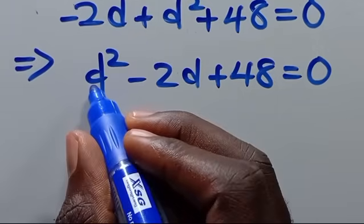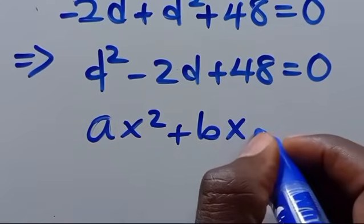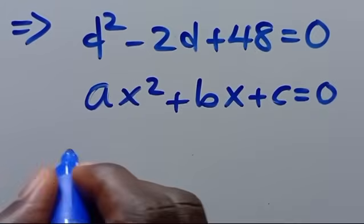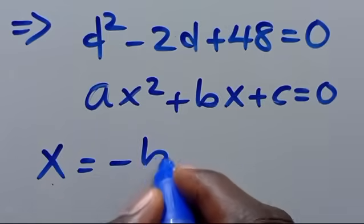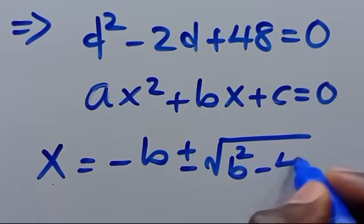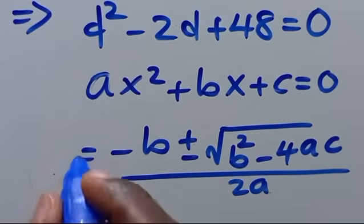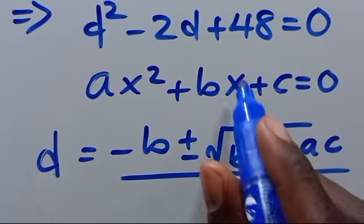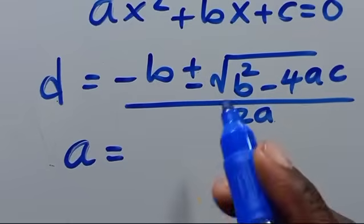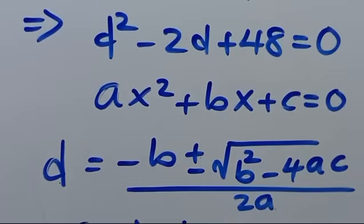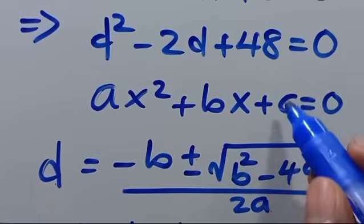We need to solve for d using the quadratic formula. Recall: for ax squared plus bx plus c equals 0, x equals negative b plus or minus square root of b squared minus 4ac, all over 2a. Here a is the coefficient of d squared, which is 1; b is the coefficient of d, which is minus 2; and c is the constant, which is 48.